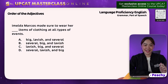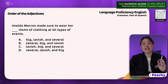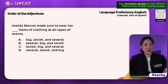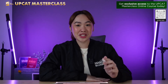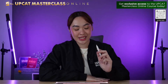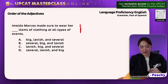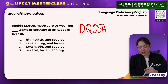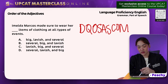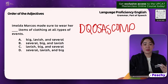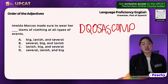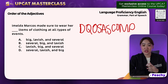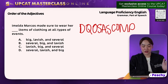Okay, for this item, we are looking at the order of adjectives. Now, it's important to remember this acronym: DQOSASCOM. Let me just write that down — DQOSASCOM. With this acronym, it would be easier for us to write down the adjectives in order that would make it sound more coherent and natural.